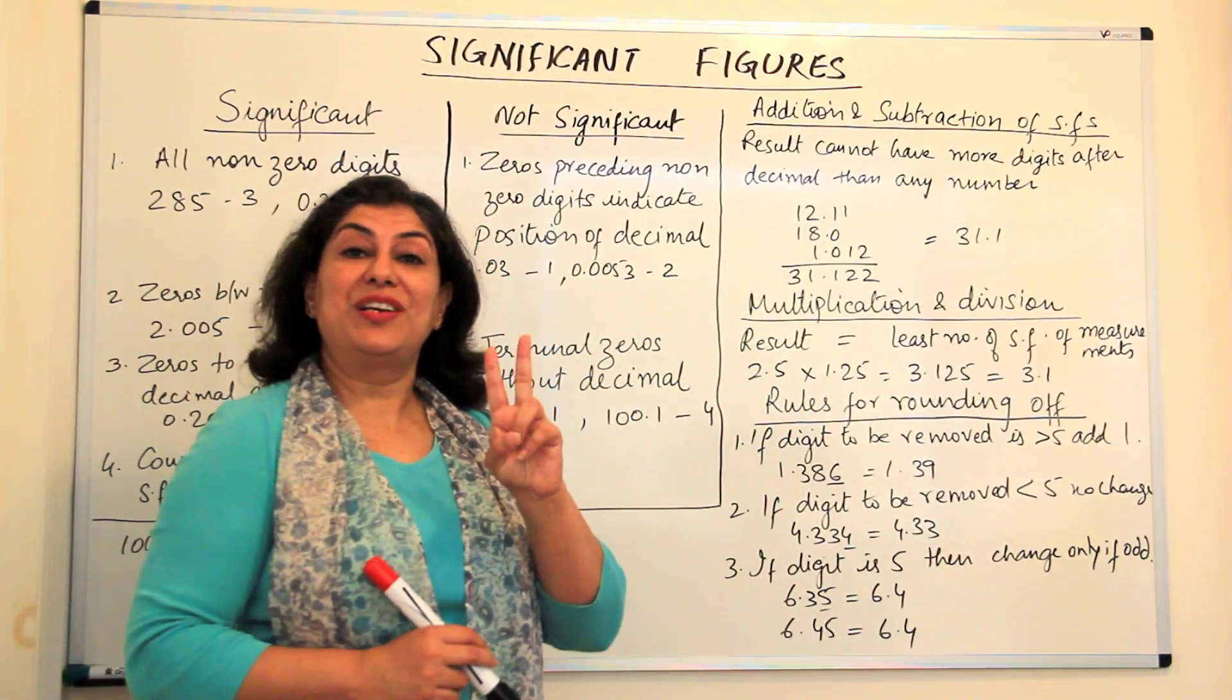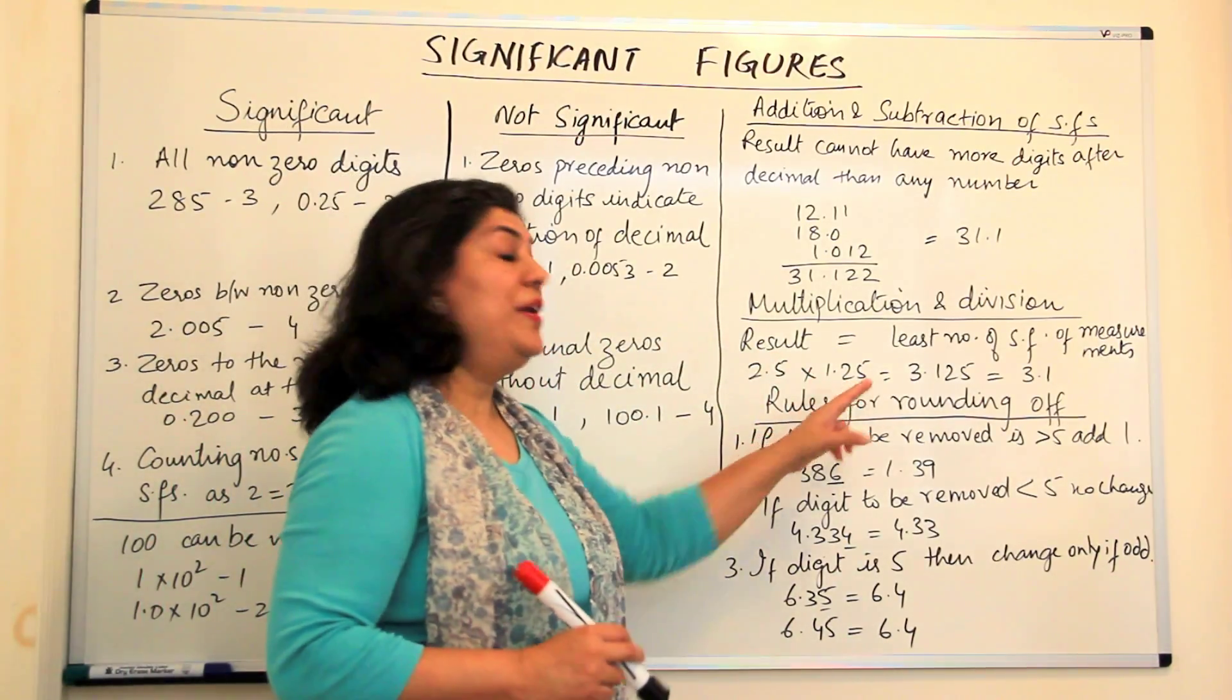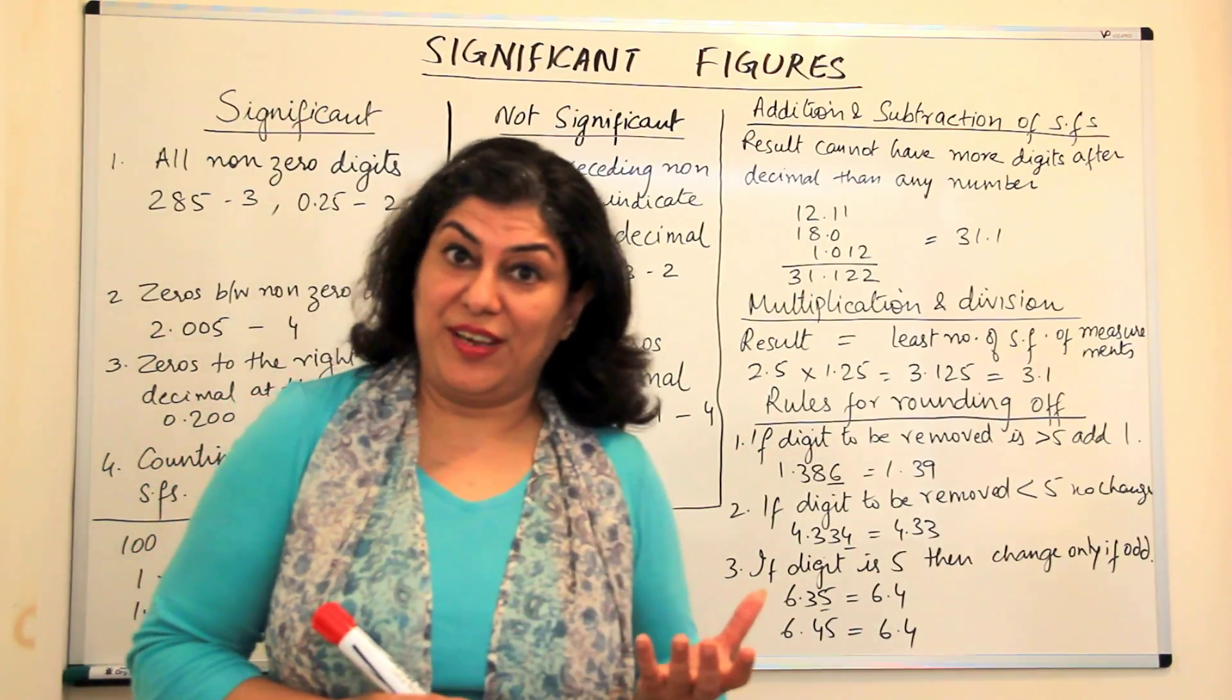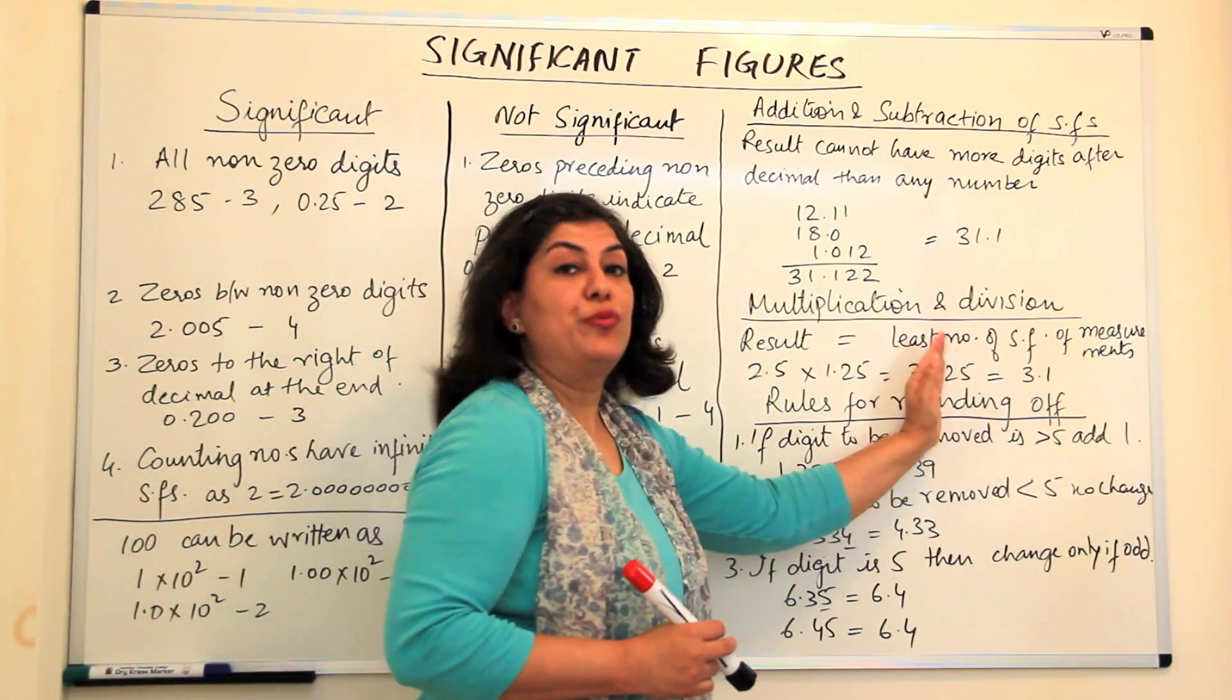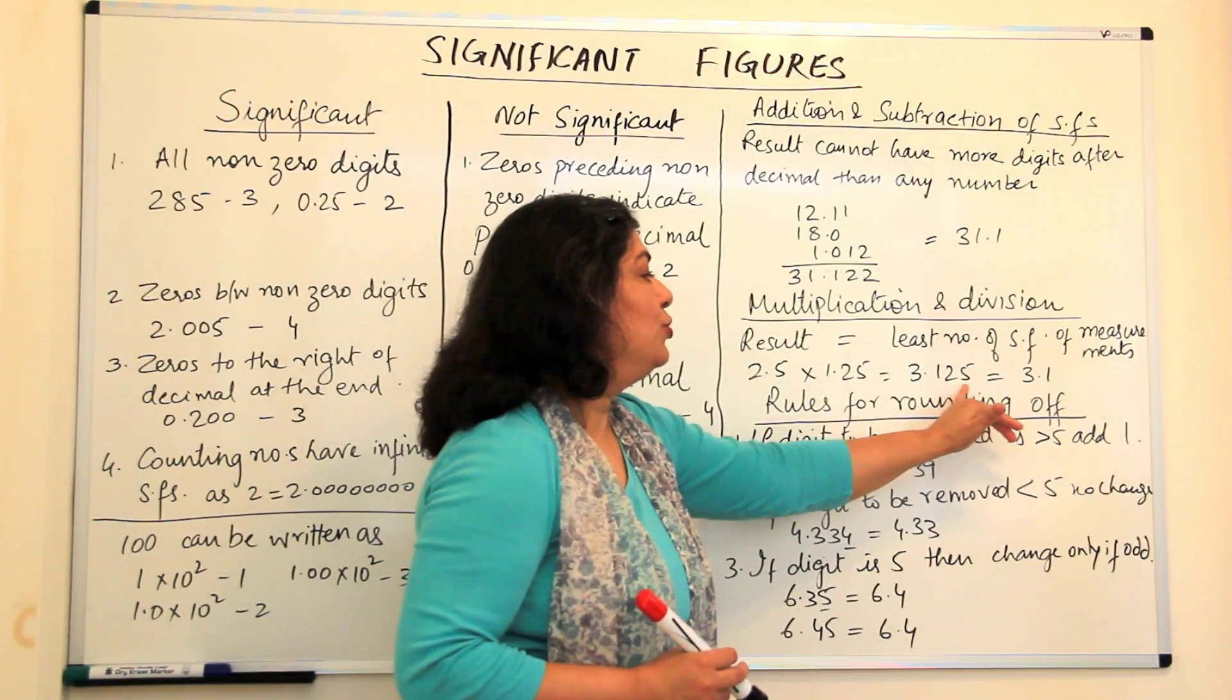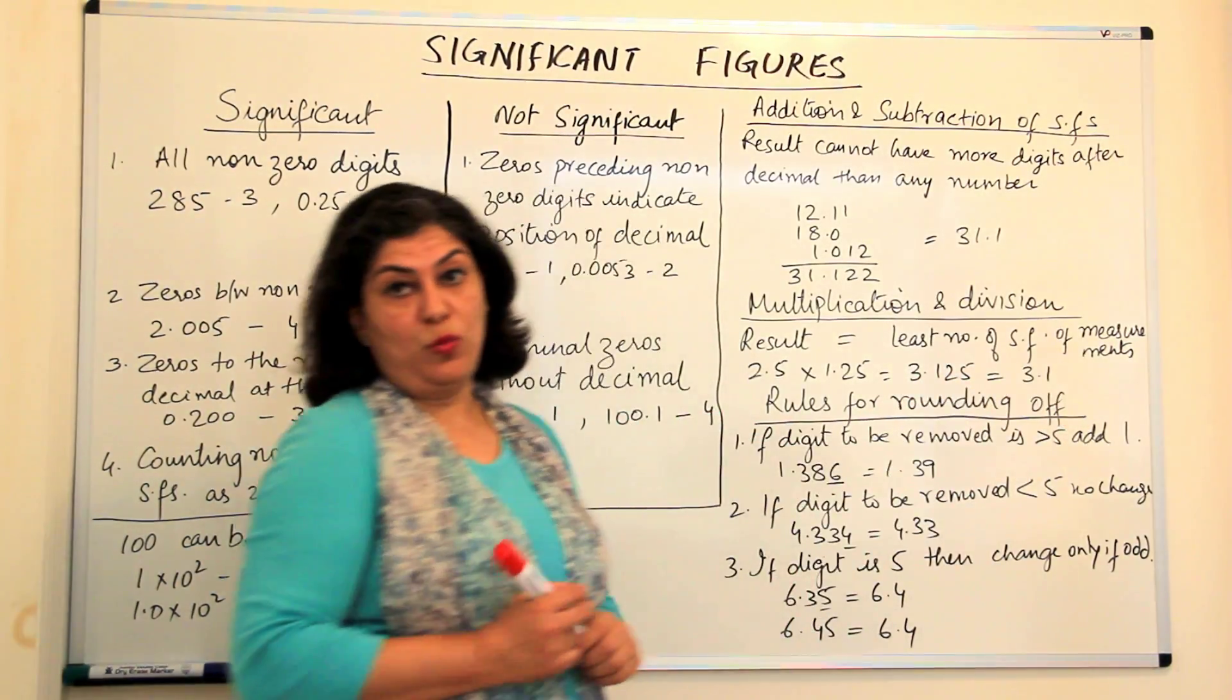But in these two measurements, 2.5 has only two significant figures, while this has three. So my answer cannot have more than two significant figures. So if it cannot have more than two significant figures, I have to round off and I have to drop the 25. So my answer would be 3.1.